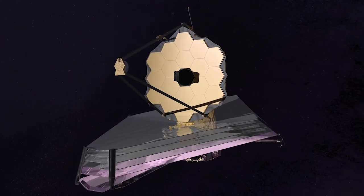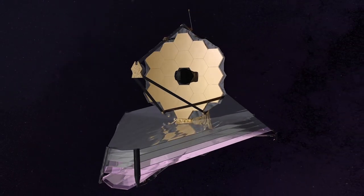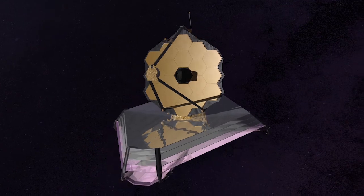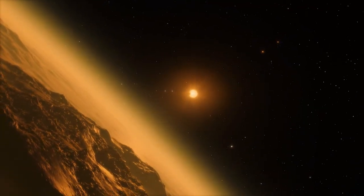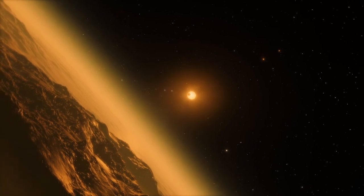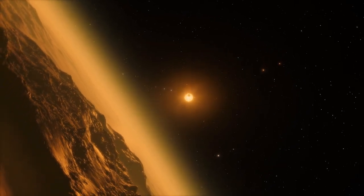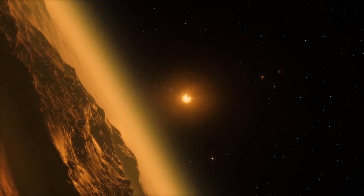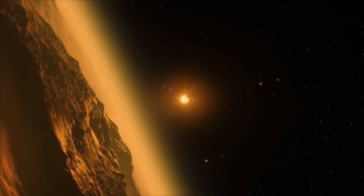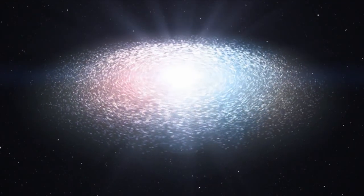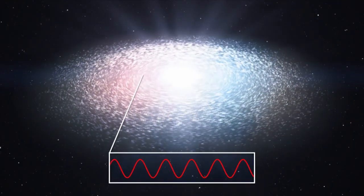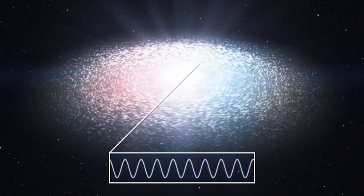The upcoming NASA-ESA-CSA James Webb Space Telescope will be able to penetrate deep into an exoplanet's atmosphere to detect methane and oxygen if they exist there. Not only will the new observatory support spectroscopic observations of exoplanets, but it will also pioneer new spectroscopy research in all areas of astronomy.